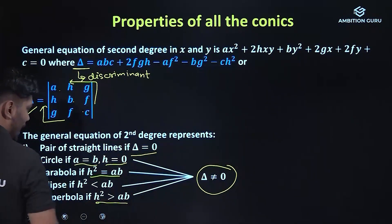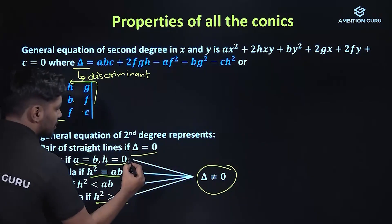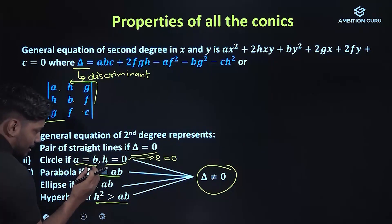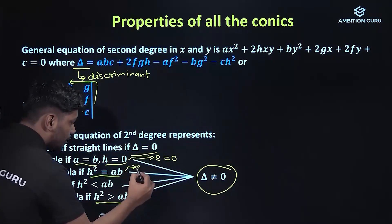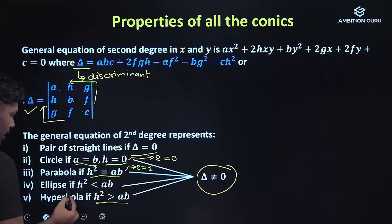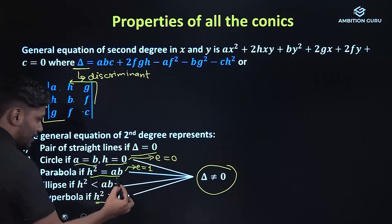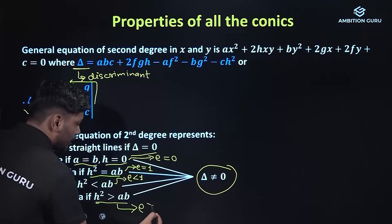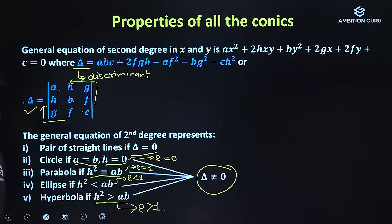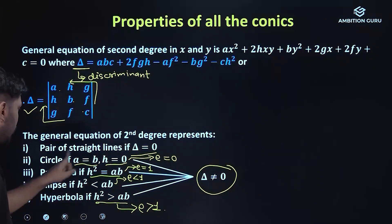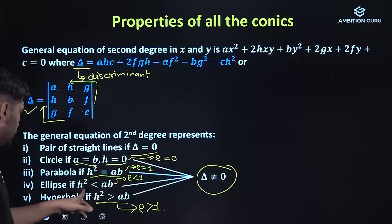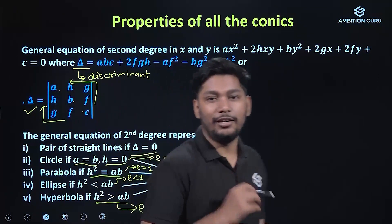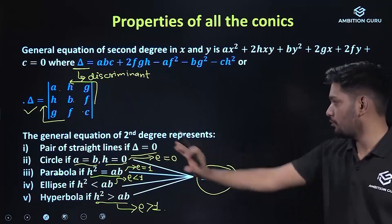For eccentricity: a circle has eccentricity equal to 0; a parabola has eccentricity equal to 1; an ellipse has eccentricity less than 1; and a hyperbola has eccentricity greater than 1. These are important values to memorize, as they often appear in exam questions.